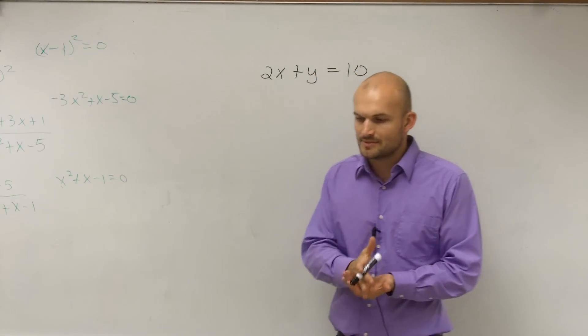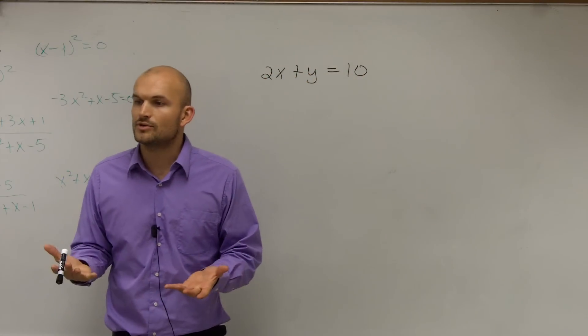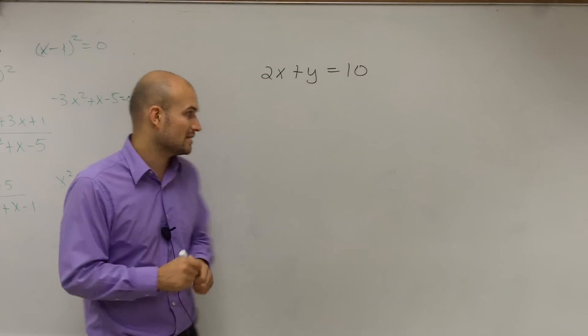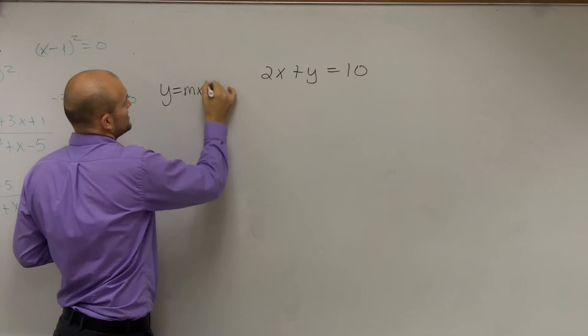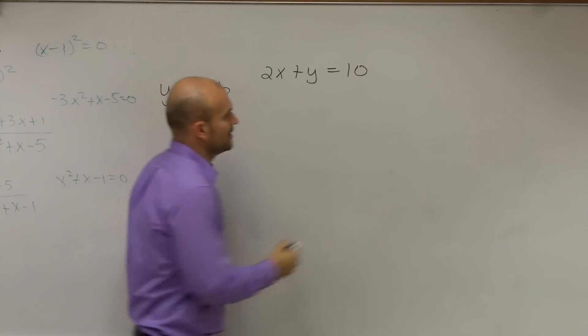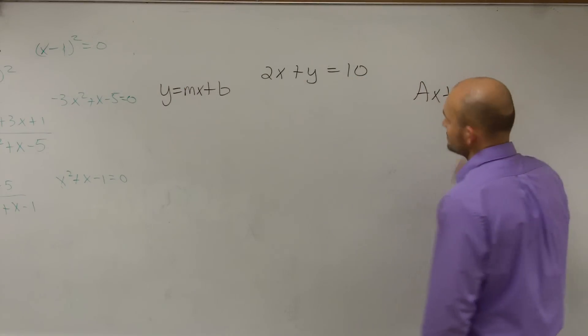And the one thing we talked about when dealing with a line was we could put it in our formations of our line. So we talked about two equations of a line. One was y equals mx plus b, and the other one was their standard form, which is Ax plus By equals C.